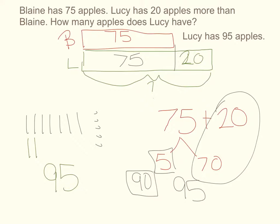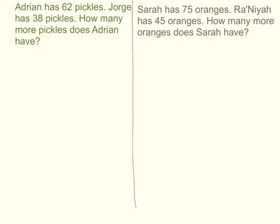Now let's try one together. Pause the video while you go get a pen or pencil and paper, and start the video again when you're ready to continue. Okay, second graders — for these problems you're going to need a piece of paper and a pencil of your own. I'm going to solve the problem over here in green, and I'd like for you to solve the problem over here in brown. Pause the video while you go get a pencil and paper, and start the video again when you're ready to continue.